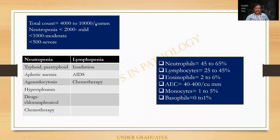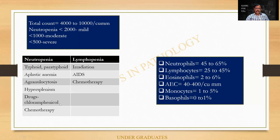The normal WBC count is 4000 to 10000. Neutropenia: less than 2000 is mild; less than 1000 is moderate neutropenia; less than 500 is severe neutropenia; and it is almost absent in agranulocytosis. Causes of neutropenia include typhoid, aplastic anemia, agranulocytosis, hypersplenism, drugs such as chloramphenicol, and chemotherapy. Lymphopenia can occur after irradiation, chemotherapy, and also in patients with AIDS — a burnt-out syndrome. Agranulocytosis has been asked as a university question.